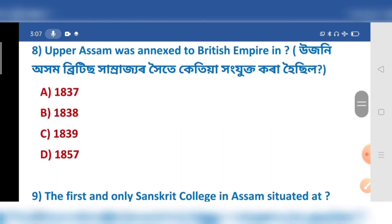Upper Assam was annexed to the British Empire in which year? Here option number — Diobo Huddotar, 1838.